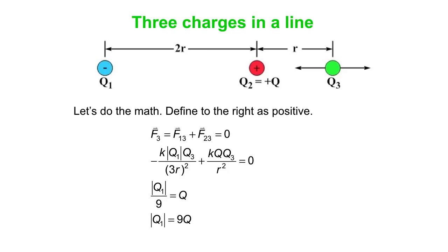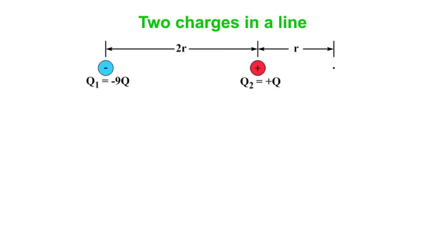If you figure it out, the magnitude of Q1 over nine must be Q, the same as the charge on Q2. Therefore Q1 has a magnitude of 9Q, and we've already established that Q1 is negative, so it's -9Q.